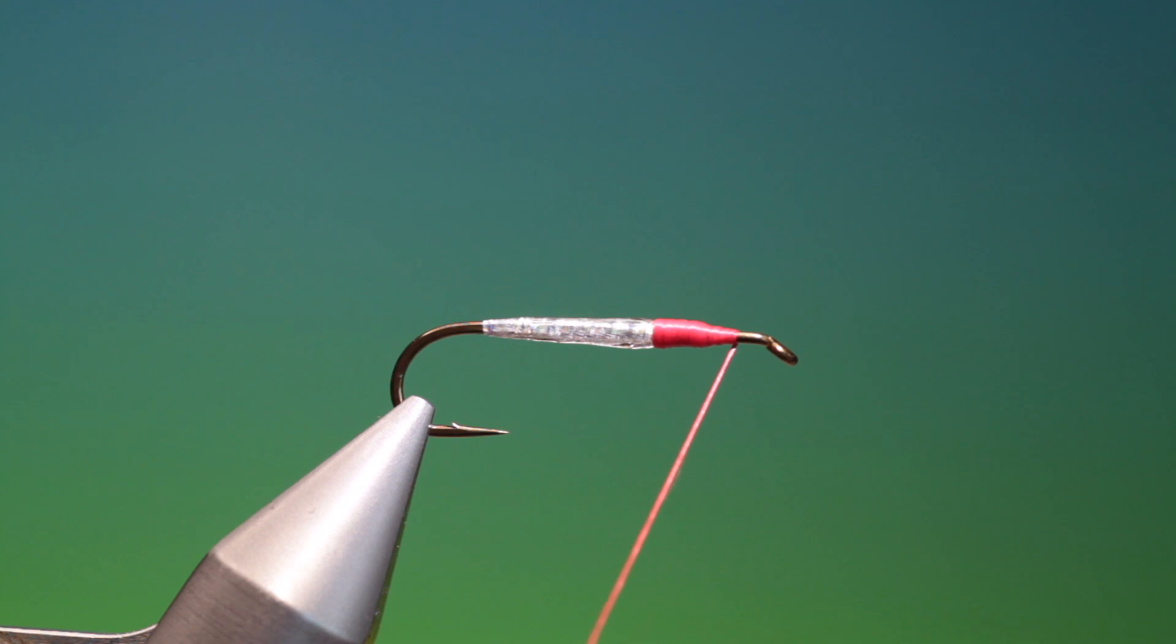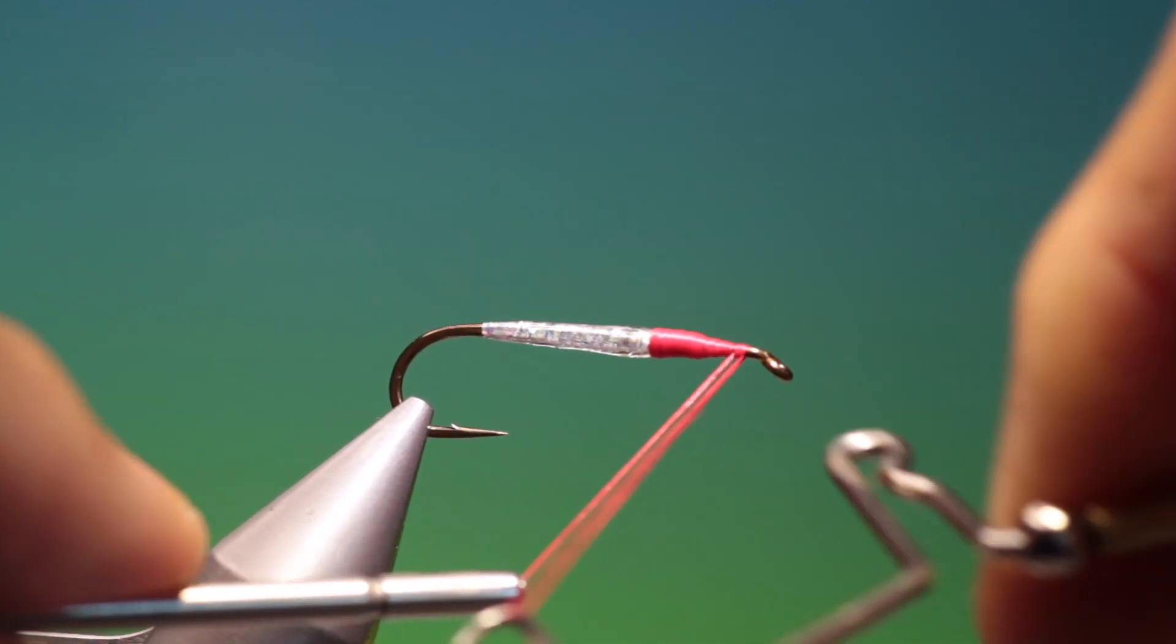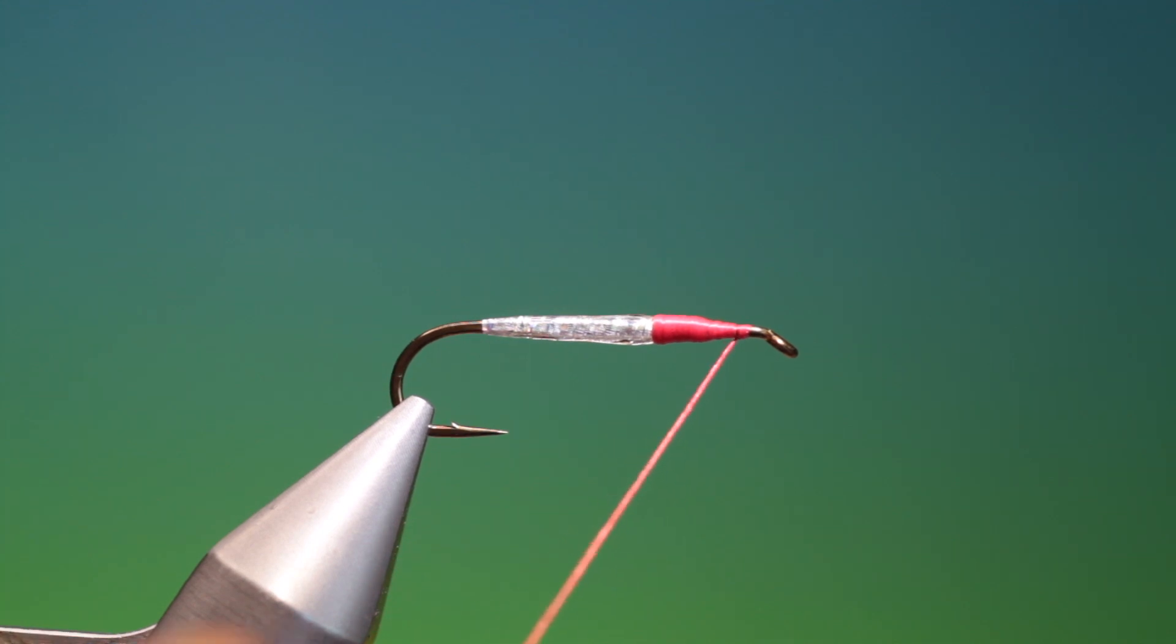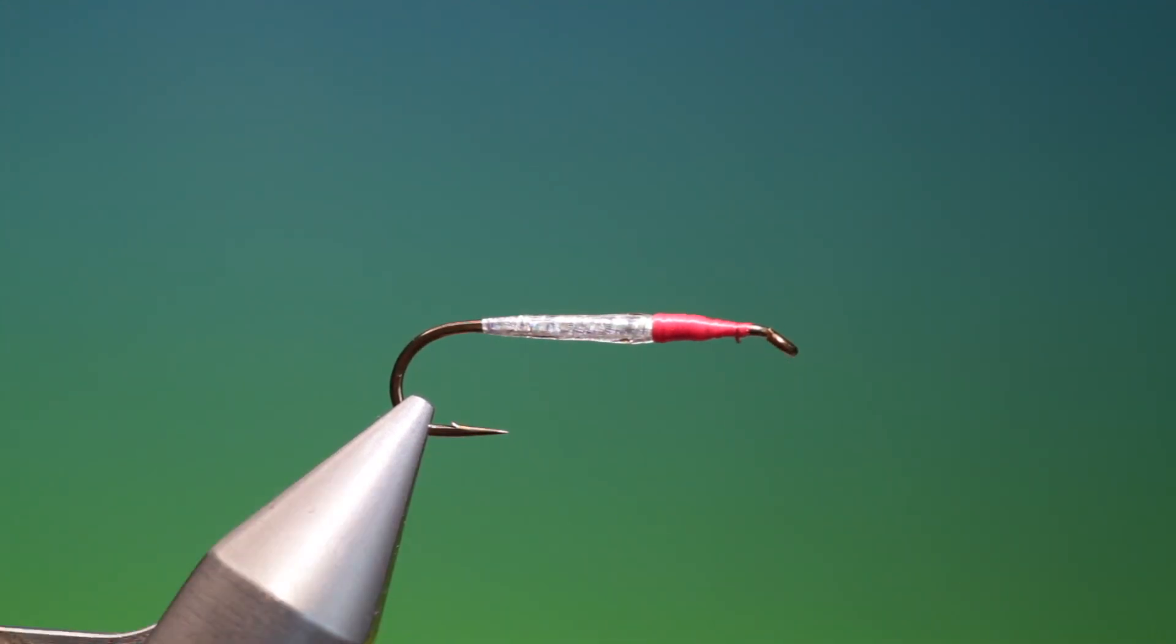So take our whip finisher first. I'll make a 3 turn whip finish in that. Just to secure that red floss. Now we'll trim that off. And go over to our black tying thread.